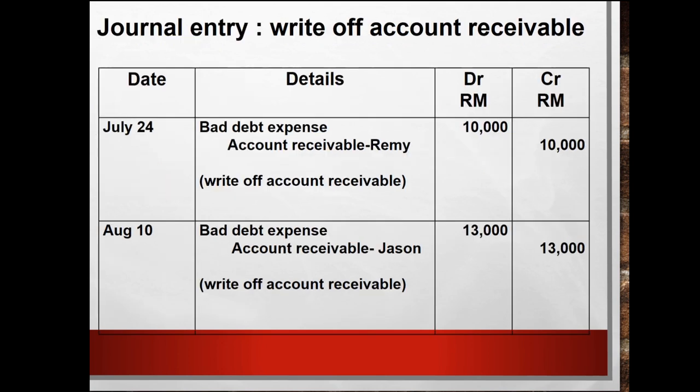From the journal entries, we have to write off accounts receivable for Remy and Jason with different dates. The first one, 24 July: debit bad debt expense RM10,000 and credit accounts receivable — Remy RM10,000. So we record the write-off of accounts receivable.